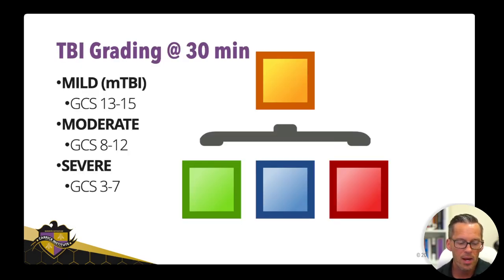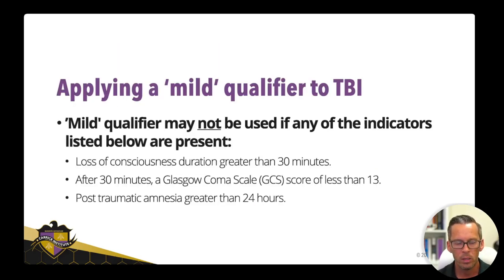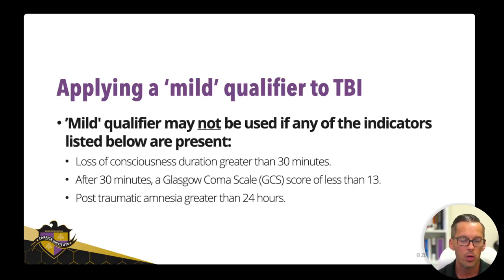When looking at TBI grading to see if somebody has a mild, moderate, or severe traumatic brain injury, you would use the Glasgow Coma Scale at 30 minutes only if they had a positive neuroimaging study. What you need at that point is the Glasgow Coma Scale at 30 minutes, and that will tell you the severity of the traumatic brain injury. The mild qualifier applies only if there is loss of consciousness less than 30 minutes, a Glasgow score greater than 13, and no amnesia greater than 24 hours.